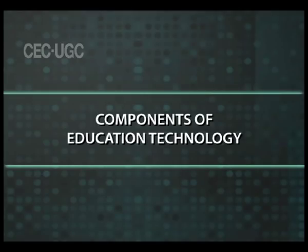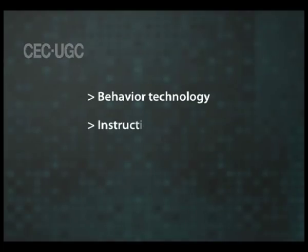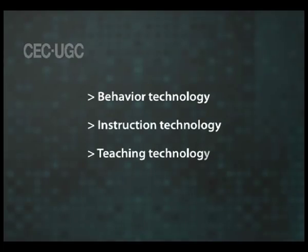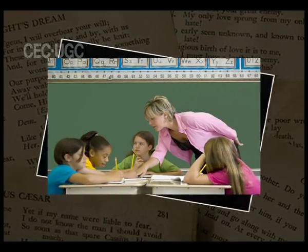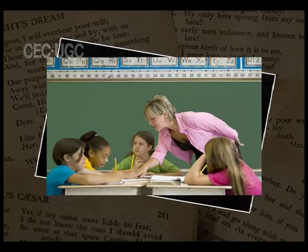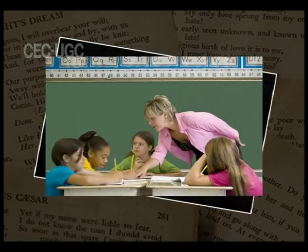Components of education technology: there are different components of education technology — behavior technology, instruction technology, and teaching technology. Behavior technology emphasizes the use of psychological principles in learning and teaching. Behavior technology intends to expand, progress, and develop in the field of behavior and learning.